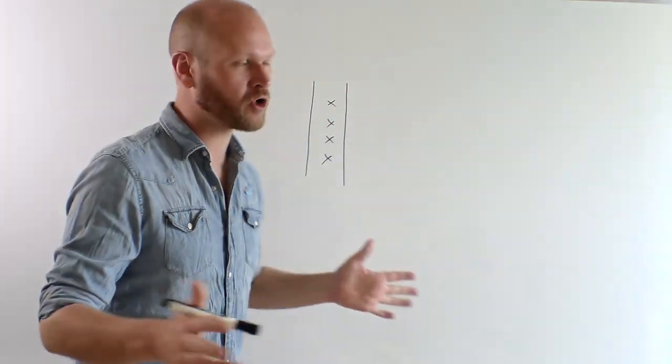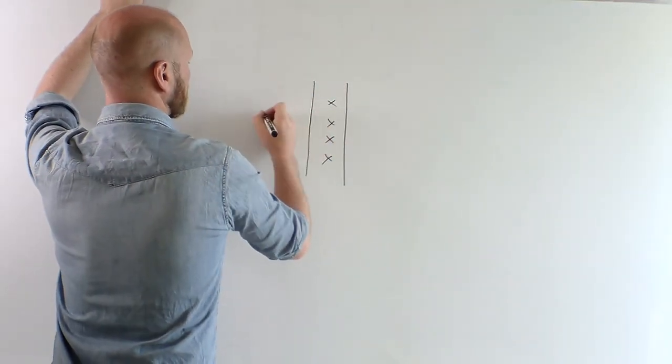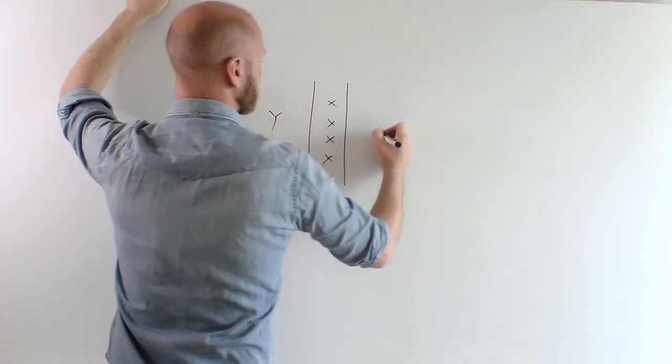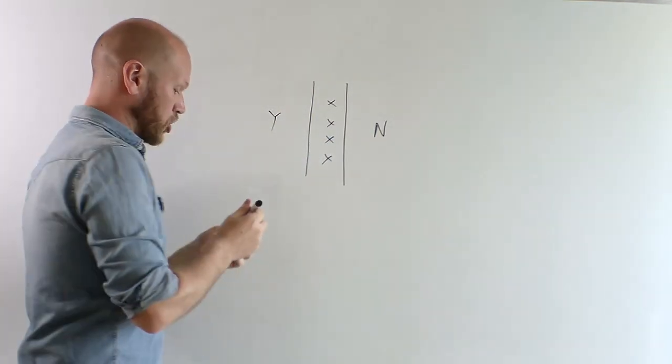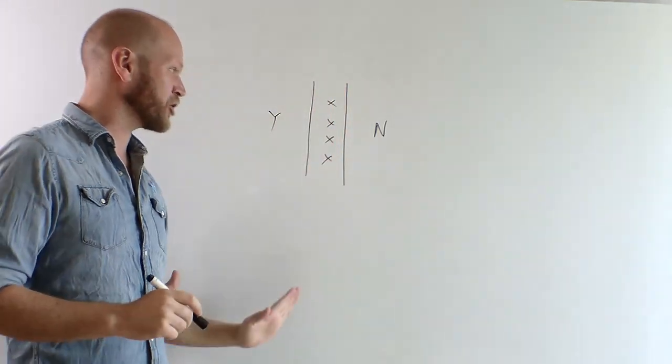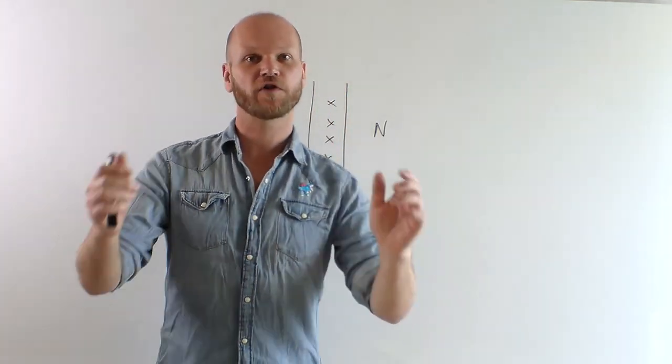Instead of True or False, just change to Yes or No. On the floor, Y equals Yes, N equals No. Once again, have your students stand in the middle. And you can show a flashcard.